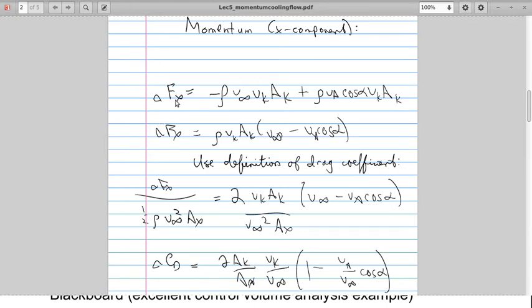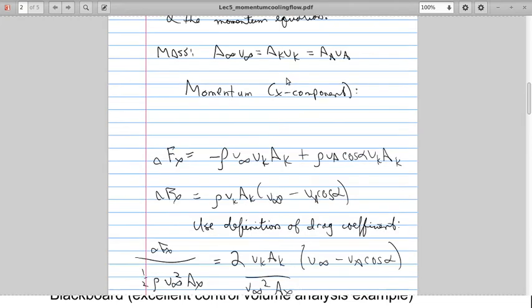And if we look at the X component of momentum, the change in the force in the X direction compared to if the flow wasn't there is going to be given basically by the extra contributions of just that internal flow. So this is negative rho V infinity and we should really be V infinity A infinity, but we can use our mass conservation to sub in AK VK here.